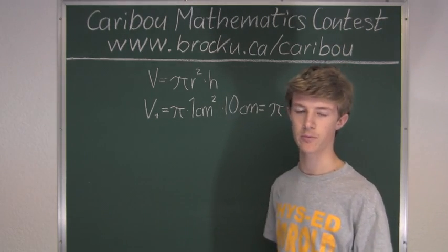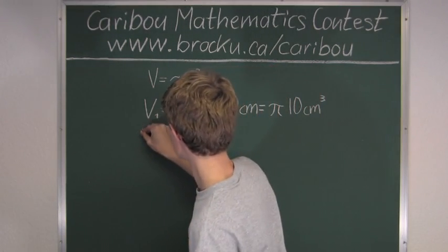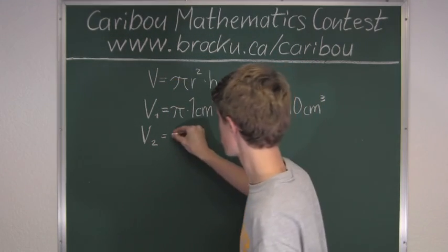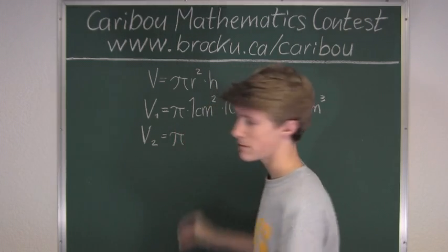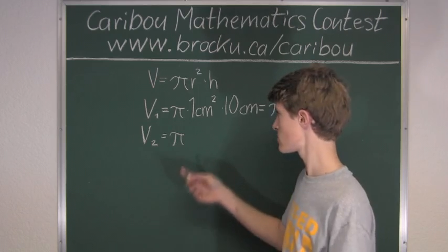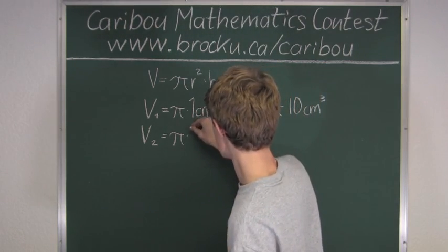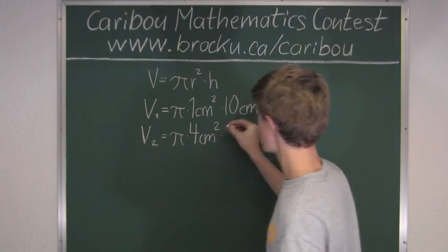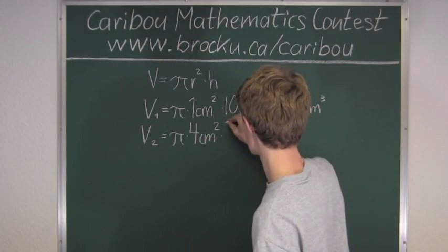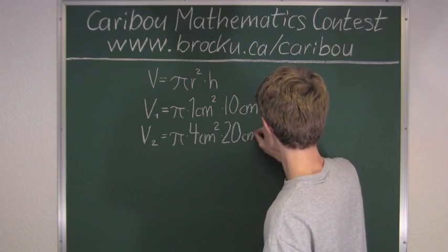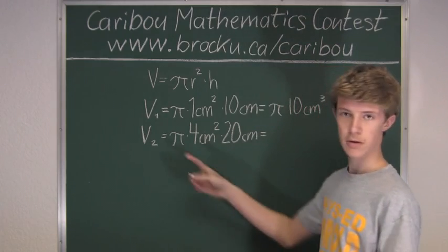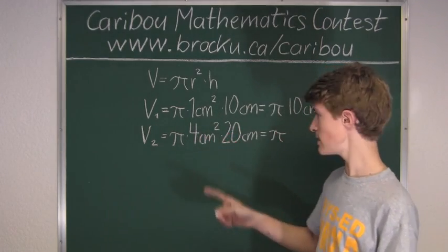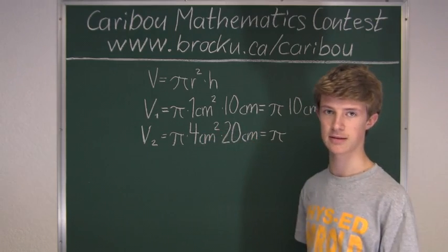Now we will write V2 for the volume of the second cylinder. Again, we have pi times the radius squared. The radius is 2 cm, so we have times 4 cm squared. The height is 20 cm. So we have pi times 4 times 20 is 80 cm cubed.